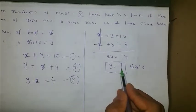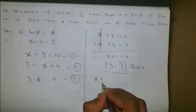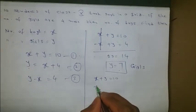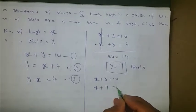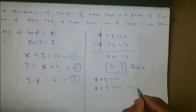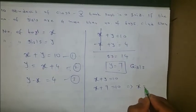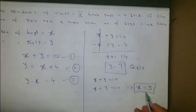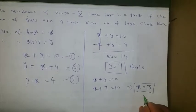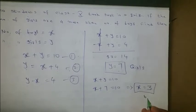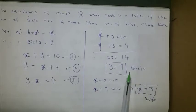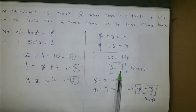Substituting y equals 7 into equation 1: x plus 7 equals 10, so x equals 10 minus 7, which is 3. x is the number of boys, so 3 boys participated and 7 girls participated in the quiz competition.